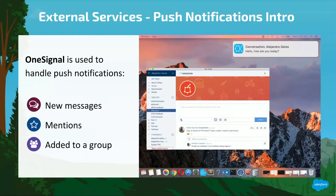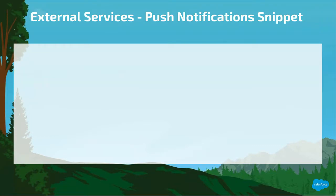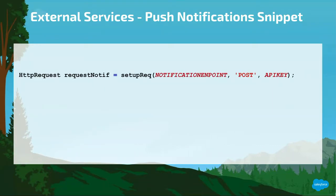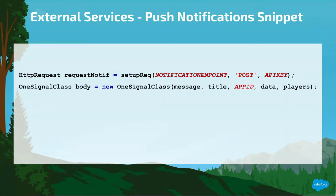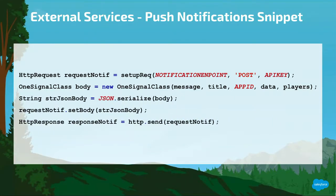The third and final external service we're going to cover is how push notifications are implemented, which uses OneSignal. OneSignal is used to notify you if you get a new message, if you are mentioned by someone else, or you're added to a group. To send a push notification to OneSignal, we create a POST request with the OneSignal API endpoint plus our API key. Next, we create an object with the message, the title, the ID of the application in OneSignal, the optional data we want to send, and a list of users who will receive the push notification. This object is serialized into JSON, set as the body of the request, and finally the push notification is sent to OneSignal.